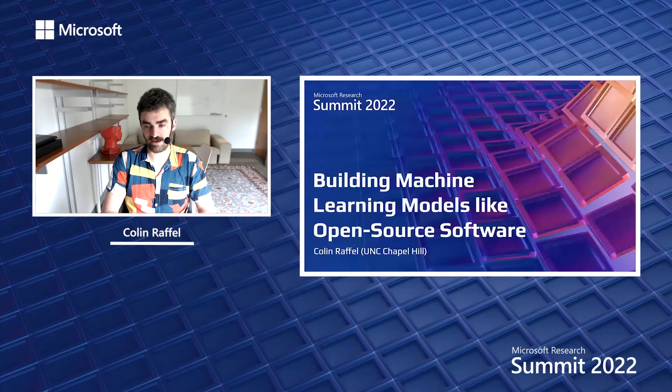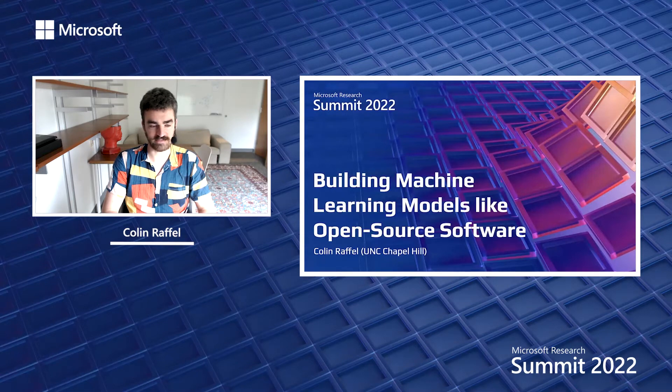Hi, my name is Colin Rafal. I'm an assistant professor at UNC Chapel Hill. Today I'm going to be talking about our work that aims to make it possible to build machine learning models in the same way that we build open source software.